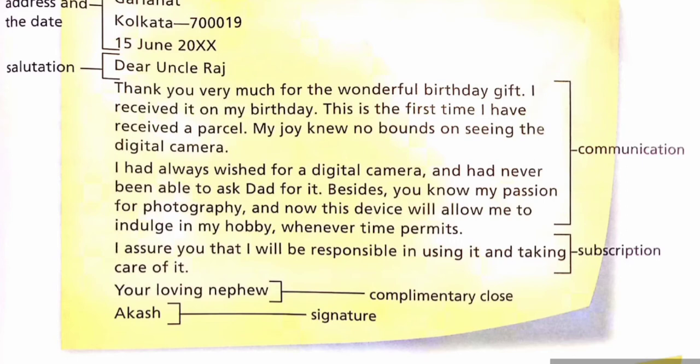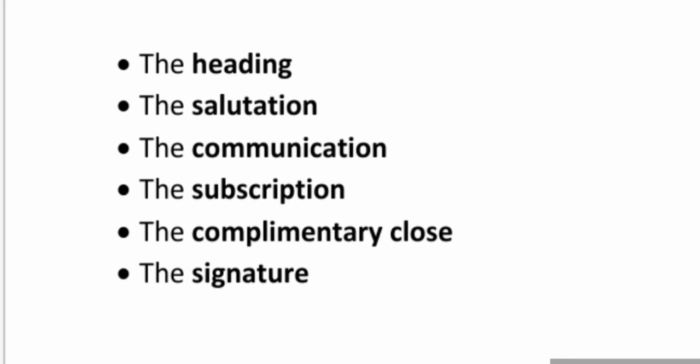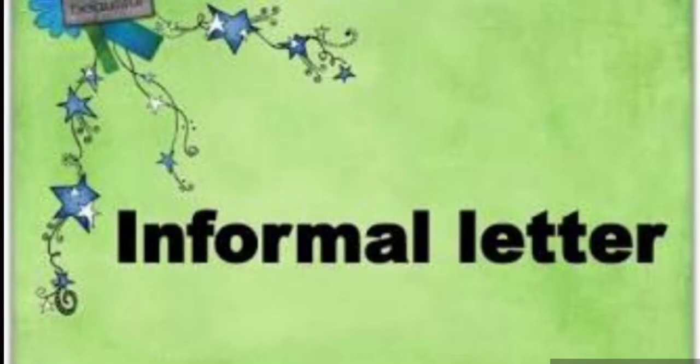So this is what an informal letter is all about — it is completely personal. The first thing is to write the sender's address and the date. Next, the salutation. After that, the communication. After that, the subscription. Then the complimentary close. And at last, the signature. These are the six steps to follow while writing an informal letter.